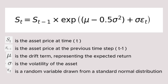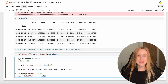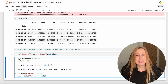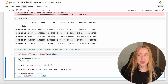The GBM formula looks like this. In the formula, mu minus 0.5 multiplied by sigma squared is the adjusted mean return accounting for volatility. Sigma multiplied by epsilon_t is the random shock scaled by volatility. Now we need to create a loop to simulate the price path — in Python we create a loop using 'for'.